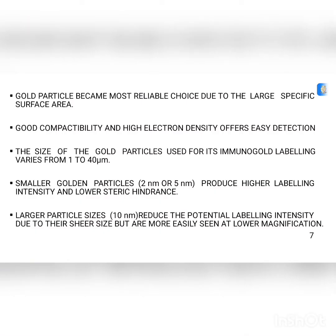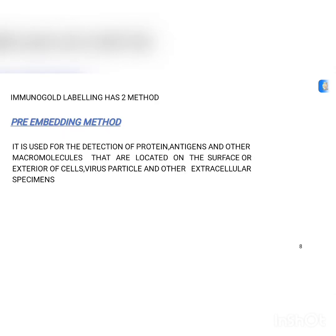Gold particles became the most reliable choice due to their large specific surface area, good biocompatibility, and high electron density, which offers easy detection. The size of gold particles used for immuno gold labeling varies from 1 to 40 nanometers.